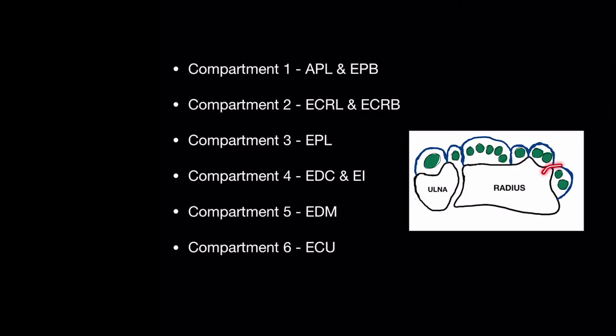In compartment 1, we have the APL and EPB tendons from the thumb. Remember the P stands for pollicis. Compartment 2 is ECRL and ECRB, the long radial wrist extensors. Compartment 3 is extensor pollicis longus.